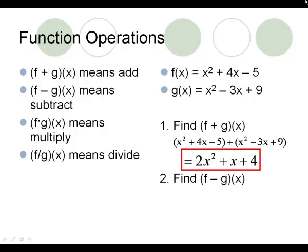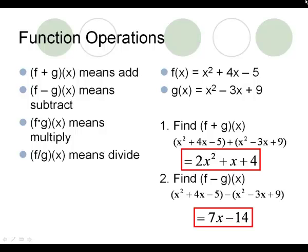Number 2, we are taking Frank and we're subtracting George, so write down Frank's equation minus George's equation, and you want to subtract like terms. So x squared minus x squared is going to cancel out. 4 subtract negative 3 would be 7, and that's how many x's you have. Negative 5 subtract 9 would be negative 14. So 7x minus 14 is what we get when we take Frank and subtract George.